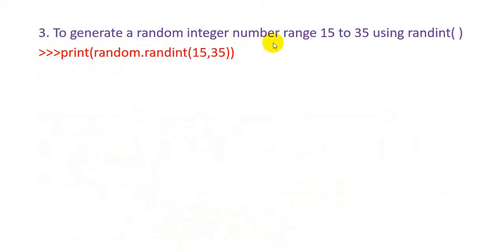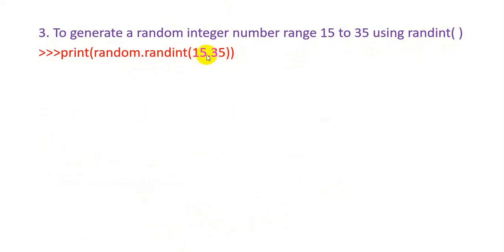To generate a random integer between 15 and 35, we have to use the randint() function: random.randint(15, 35). It will return an integer number between 15 and 35 — from lower bound 15 to upper bound 35.